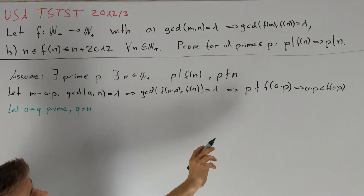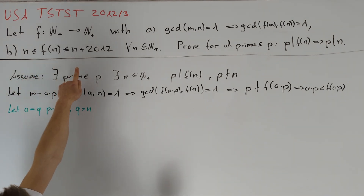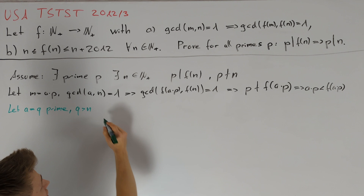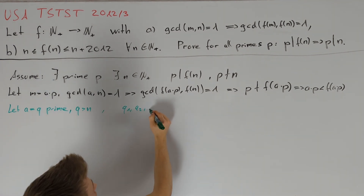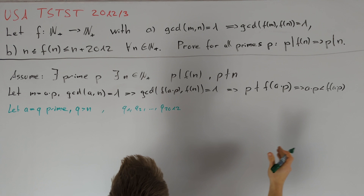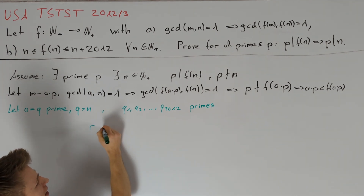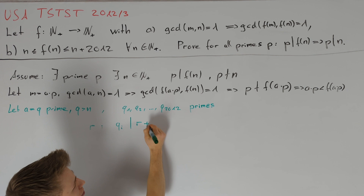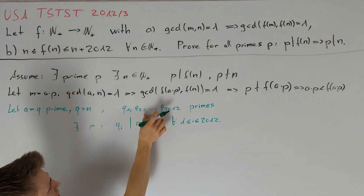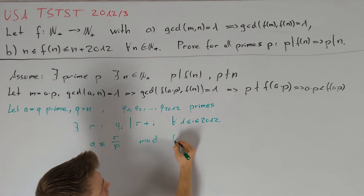Our second goal was that f(a·p) has a lot of prime divisors. First, notice that f(n) ≤ n + 2012 for all n, so there are only 2012 possible values for f(a·p). This motivates us to choose prime numbers q1, q2, ..., q2012 such that all possible values for f(a·p) are divisible by at least one of these. By the Chinese Remainder Theorem, we can find an r such that qi divides r + i for all i between 1 and 2012. We want a·p ≡ r modulo all these primes, so a ≡ r/p modulo the product of all these prime numbers.